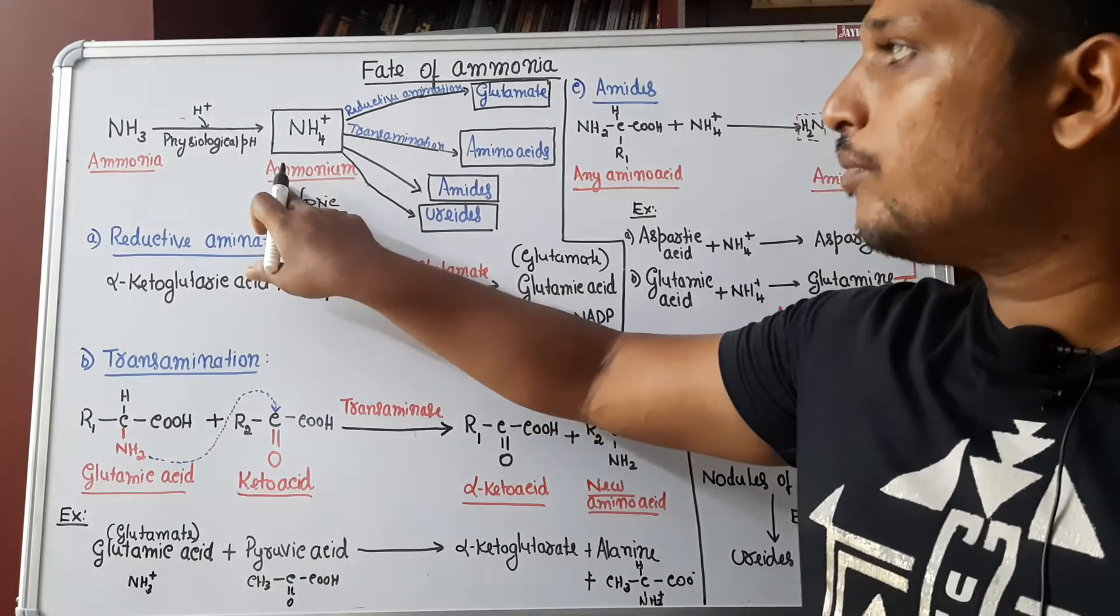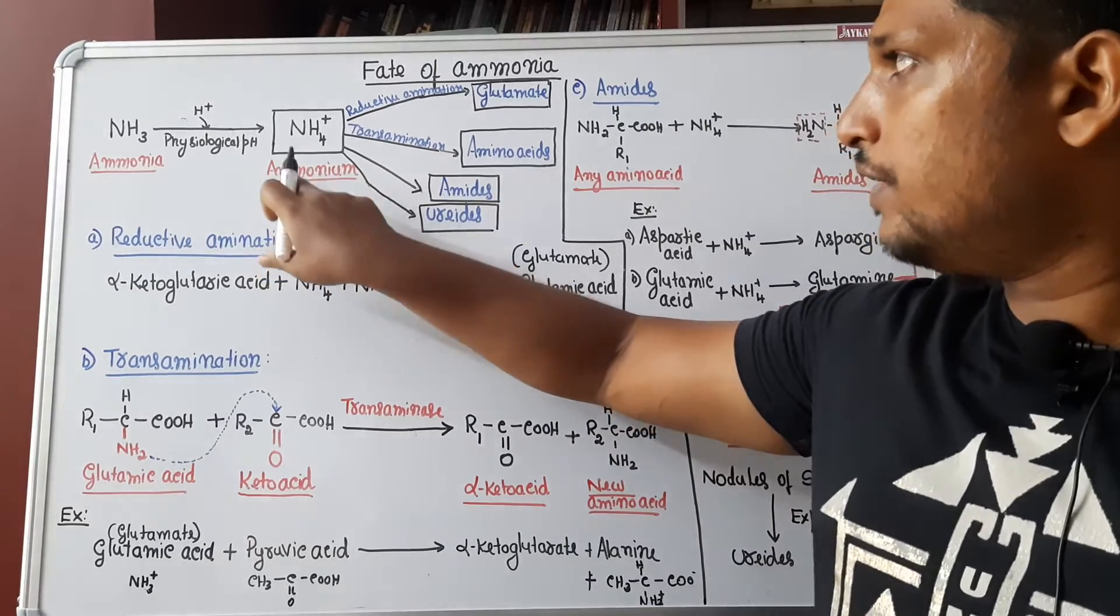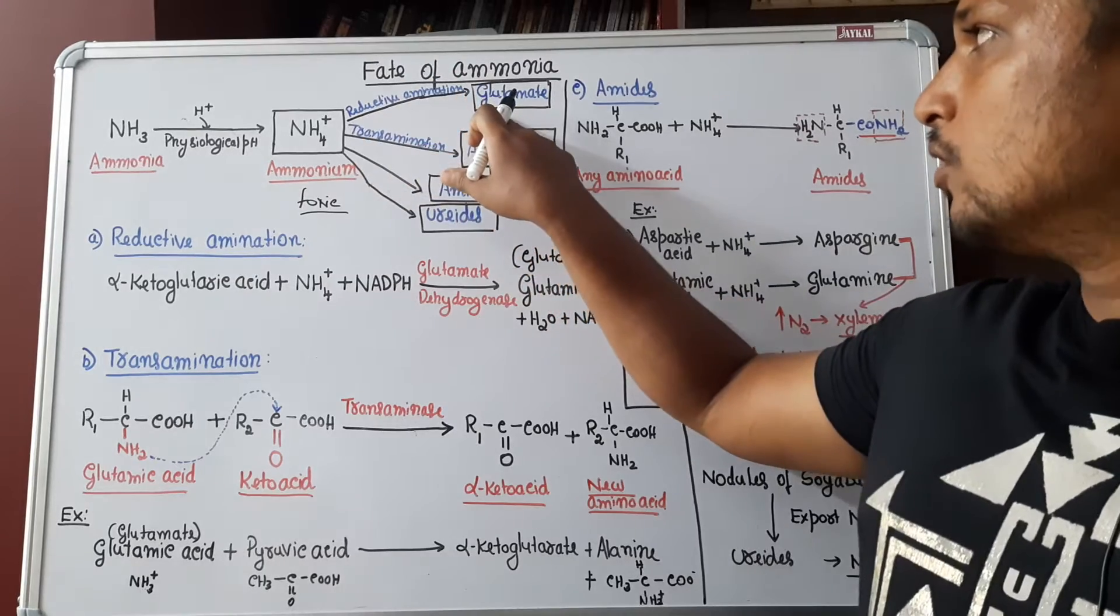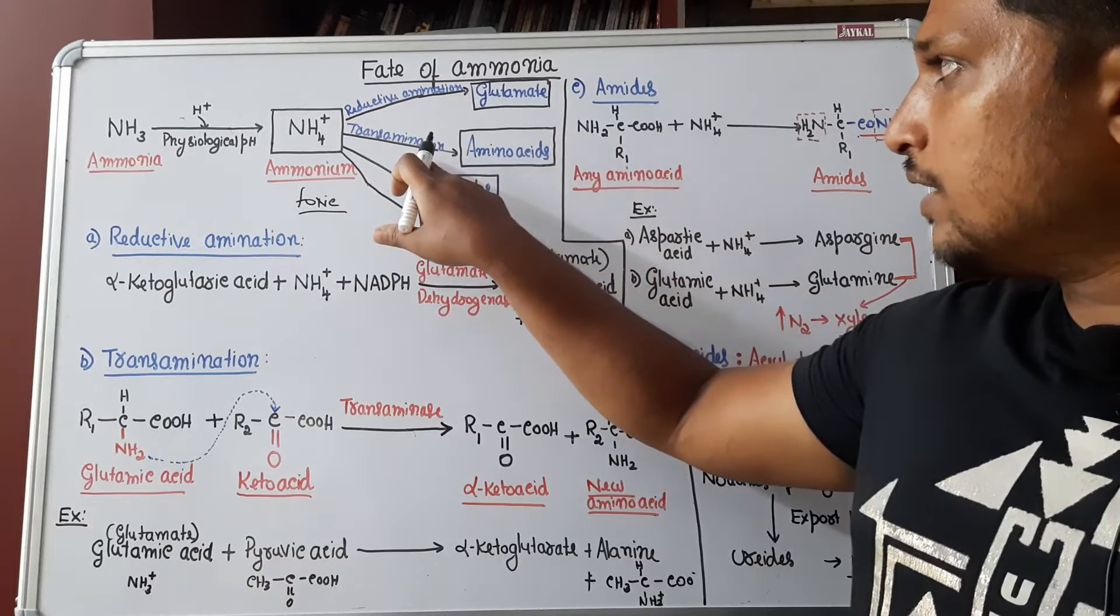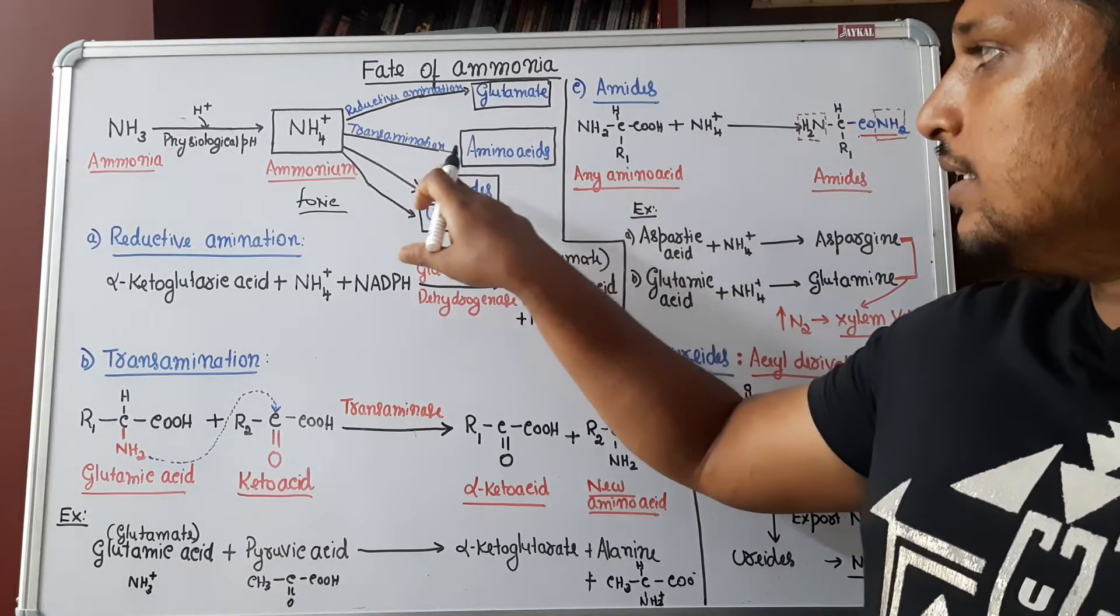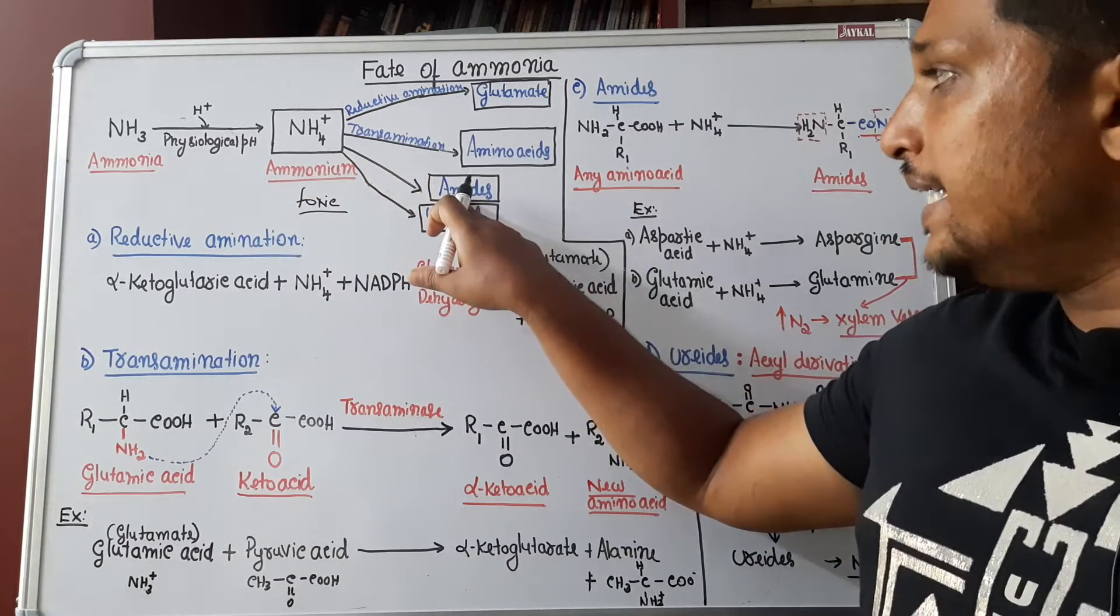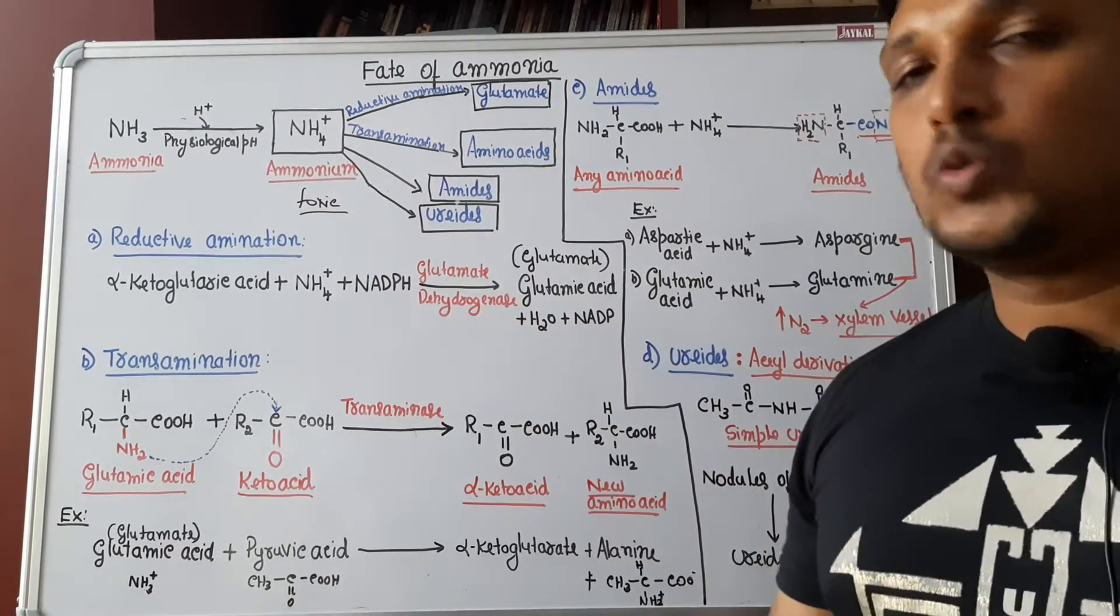What is the fate of ammonium ion? There are four fates which we are going to learn. First fate is ammonia undergoes reductive amination to form glutamate or glutamic acid. That glutamate which is formed can undergo transamination to form other amino acids. That is the second fate. Third fate is ammonium ion can form amides. Fourth fate is ammonium ion can form urides.